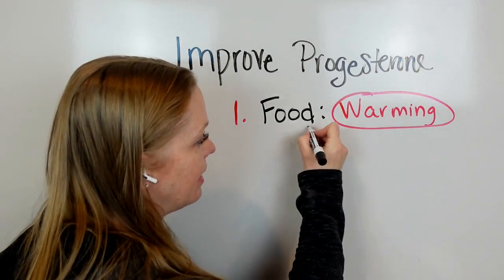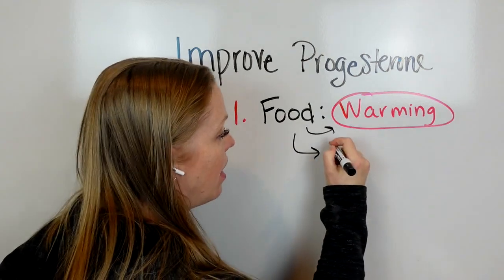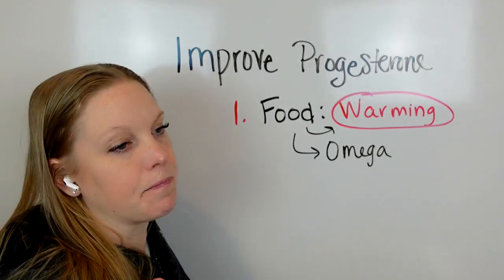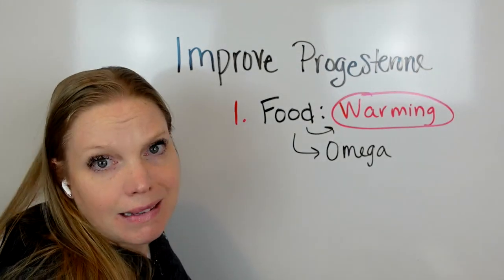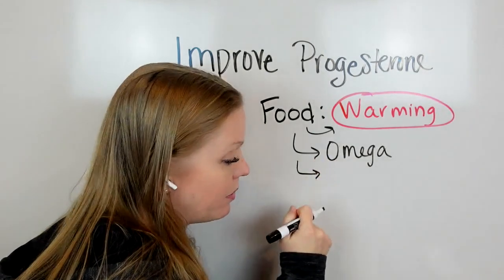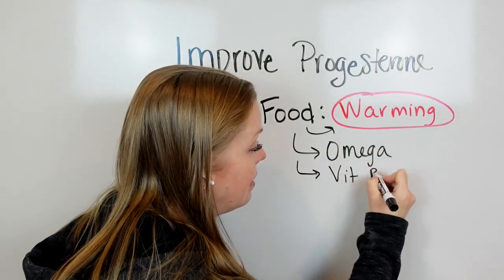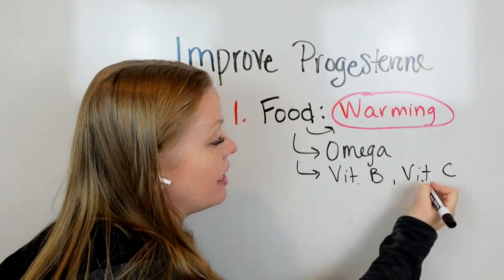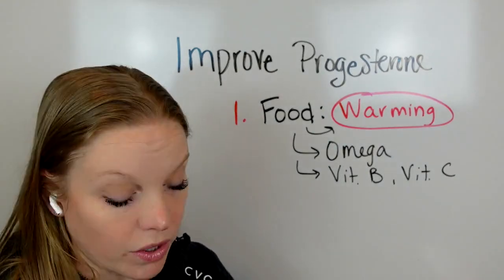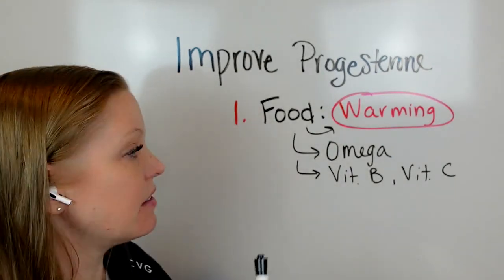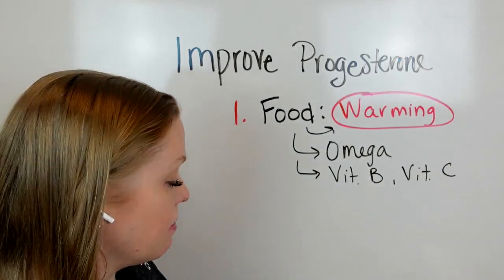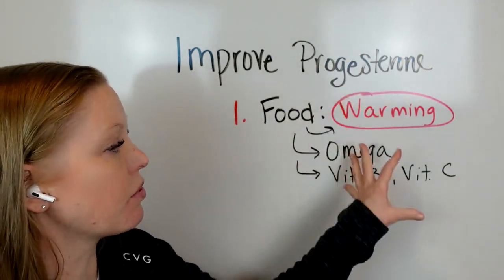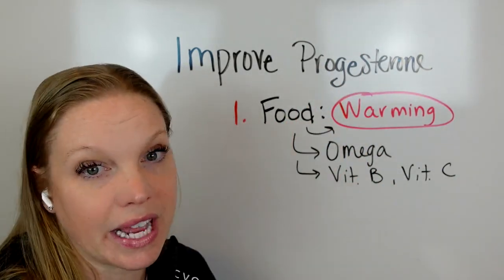The other things to look at besides warming foods, you're also going to want foods that are high in omegas. Fish, salmon, flax seed, really high in omegas. Those are going to be really helpful. Foods that are high in vitamin B and vitamin C. These vitamins overall, they don't hang out in your system. They're water soluble vitamins. So it's really important that you're getting enough of these vitamins on a regular basis. Minerals as well: copper, zinc, magnesium, very important for overall progesterone maintenance to keep your levels there.